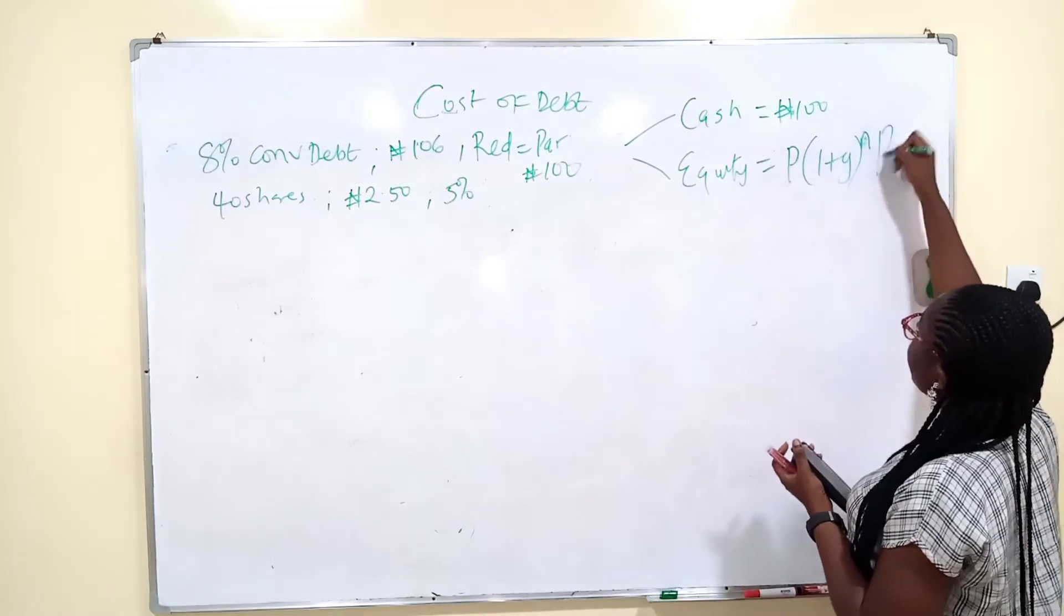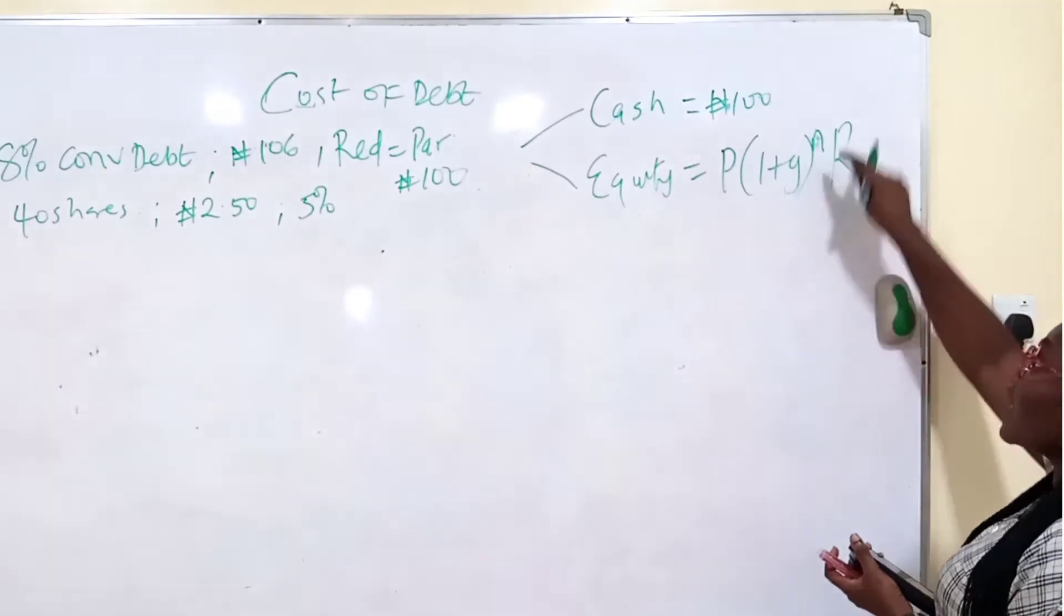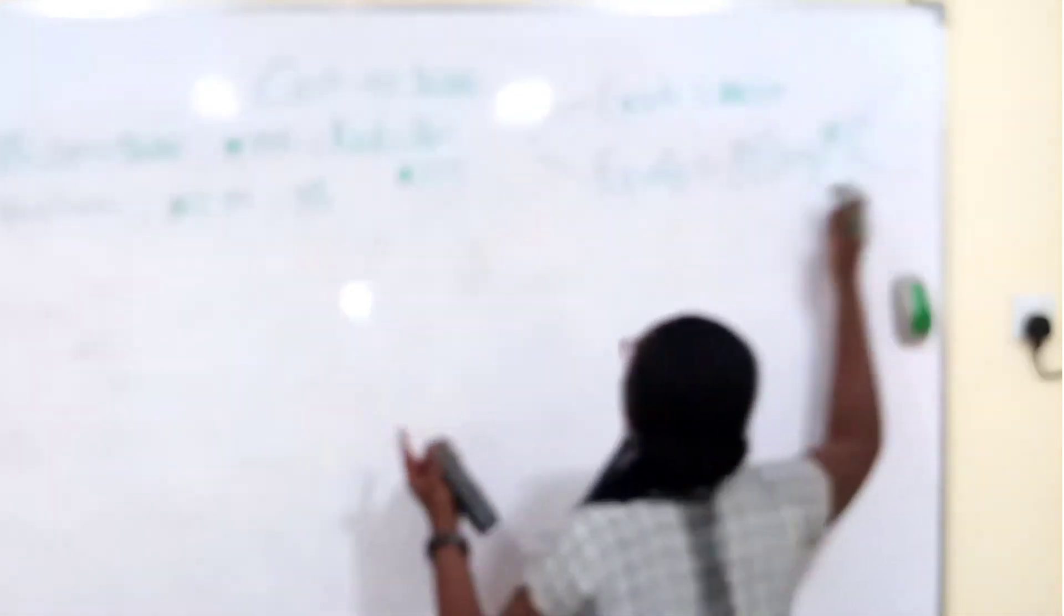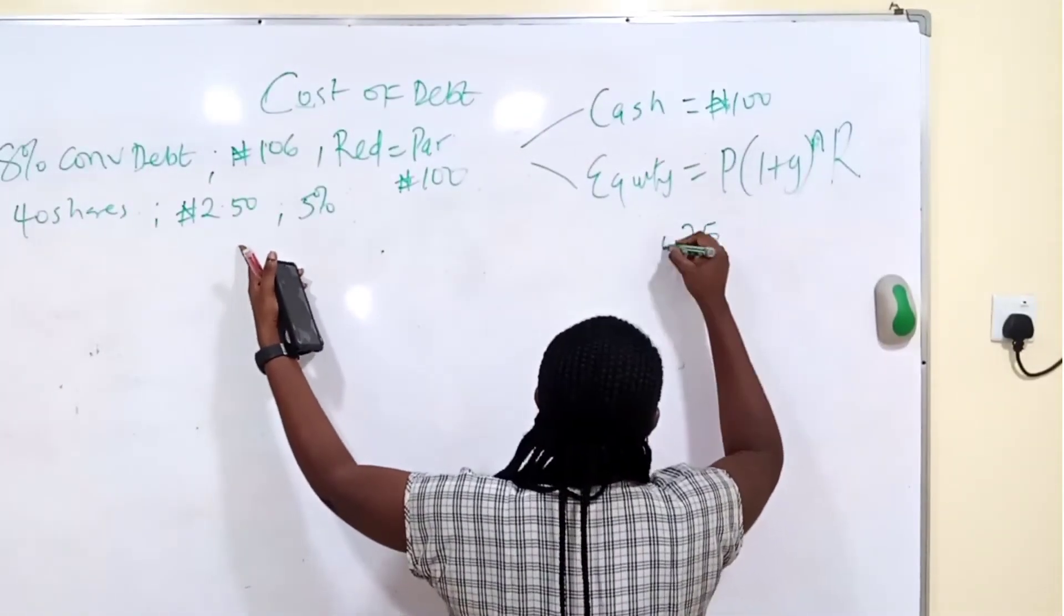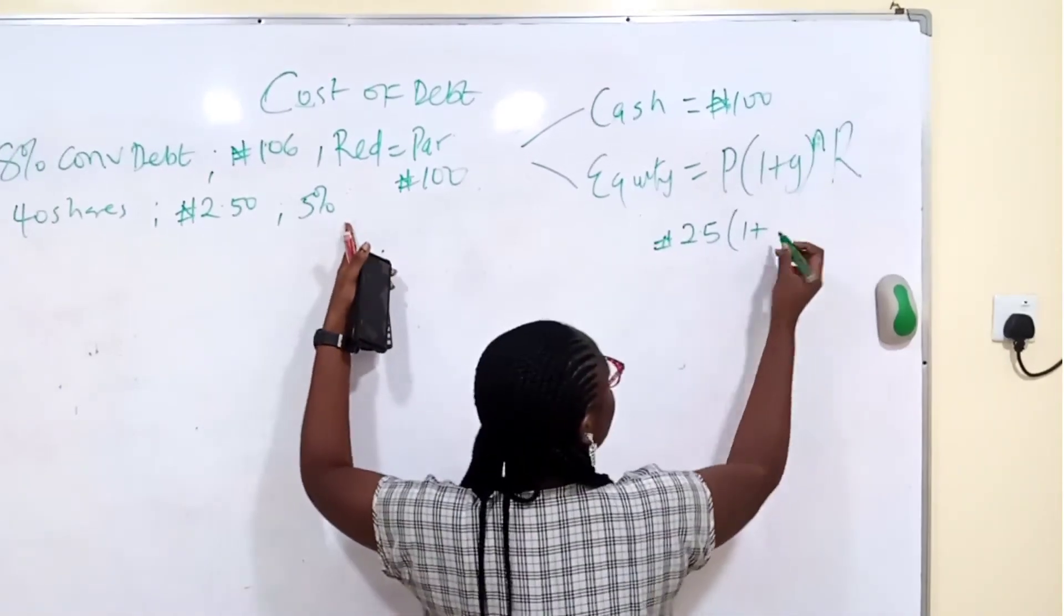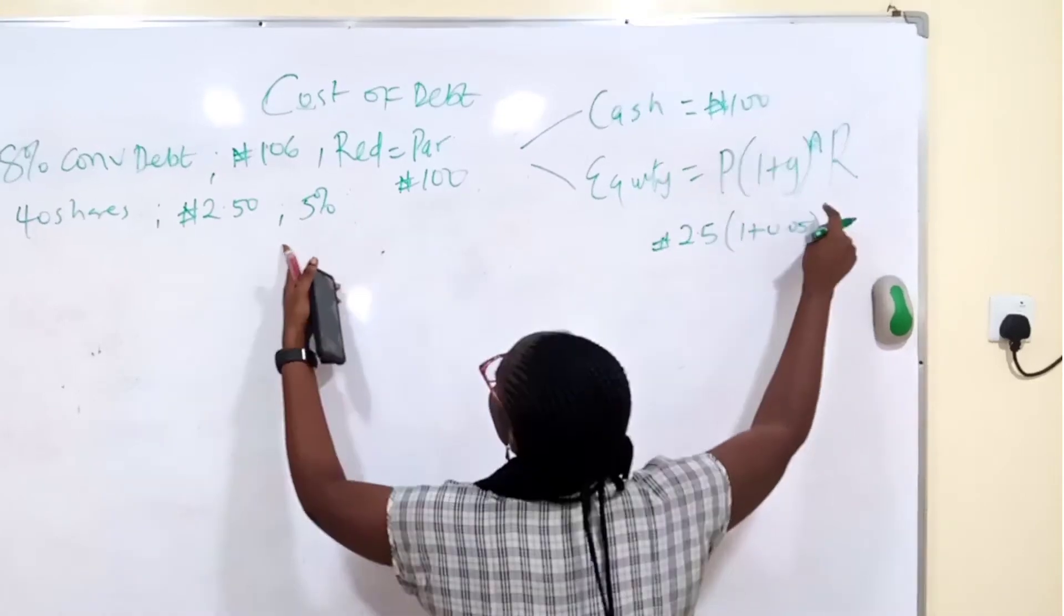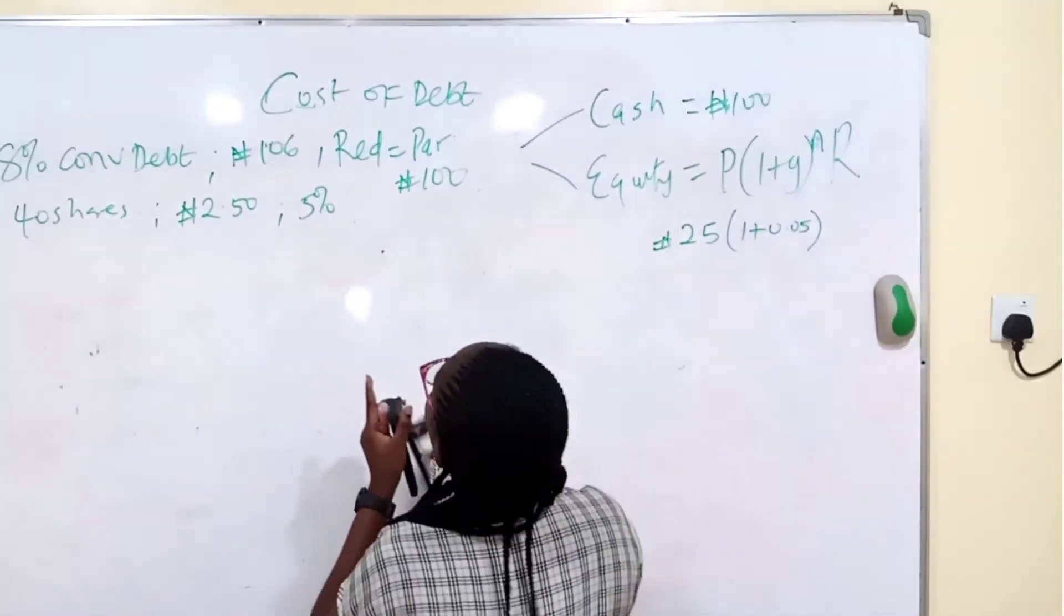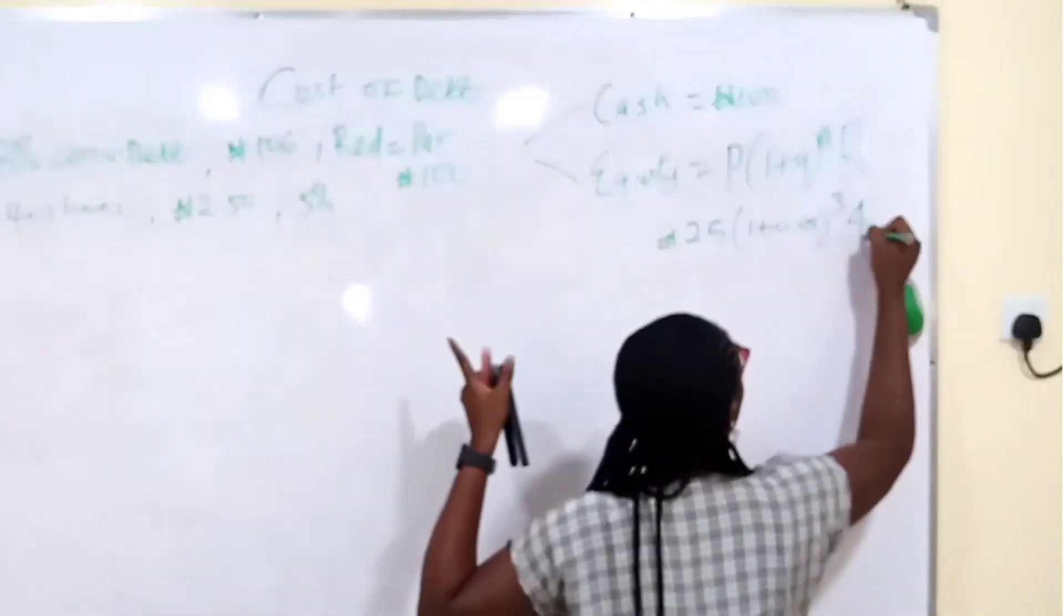And remember the formula for calculating that value of equity, convertible to equity value, is P into 1 plus G, R to power N, times R. P is the price of the share. G is the rate at which it is growing. N is the number of years to conversion, and R is the number of shares in conversion. Very simple. So the price per share, what? 2,950 combo. Growing at a rate of 5%, 5% is 0.05. In how many years? 3 years.